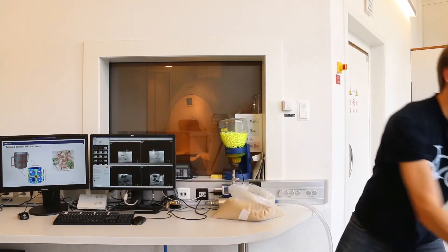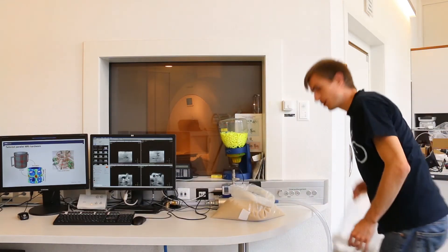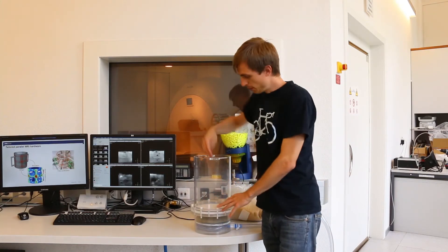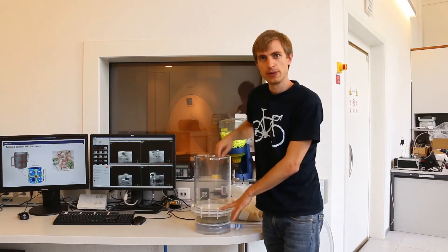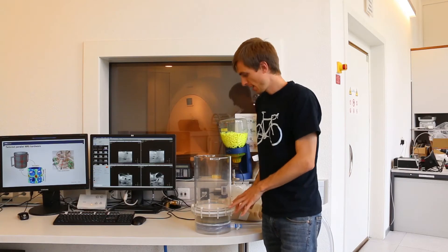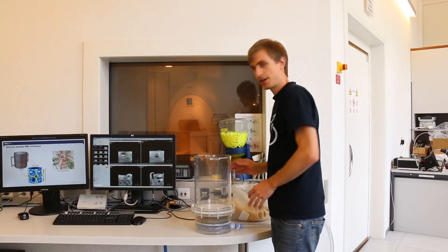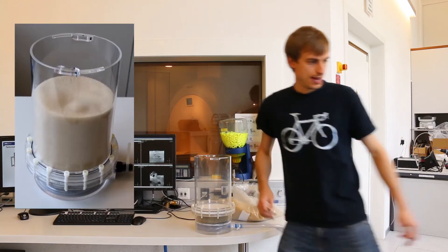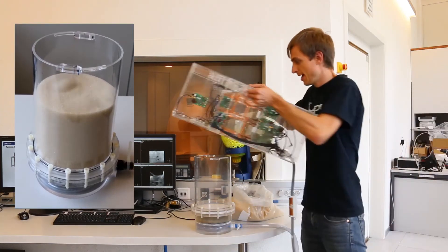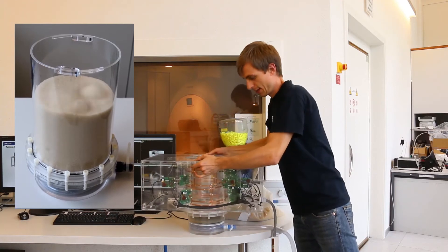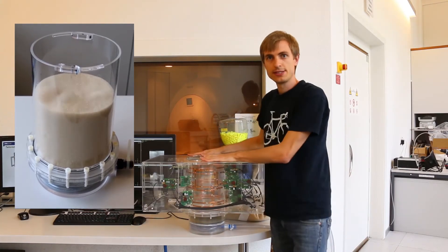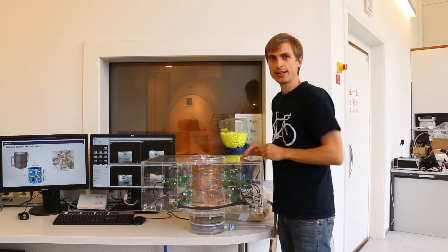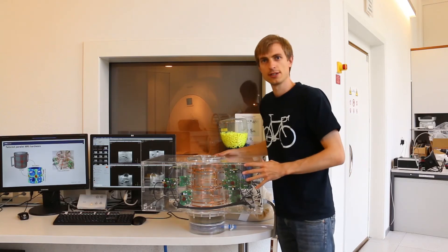The imaging setup looks like this. We have a cylindrical vessel with a perforated plate at the bottom through which we blow air. We fill this with particles and fluidize these particles through here. Then we place the radio frequency receiver close to it and put everything into the magnetic resonance imaging scanner.